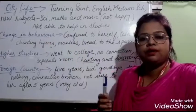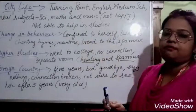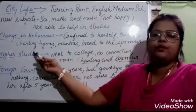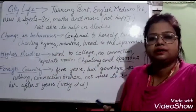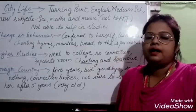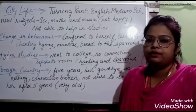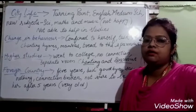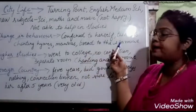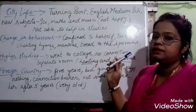Since the grandmother was not able to connect with the child anymore, her behavior changed. She confined herself — she didn't talk too much, and was always busy chanting hymns and mantras or reading religious scriptures. In the village she had offered stale bread to stray dogs, but in the city there were no stray dogs nearby. So in the evenings, after her prayers, she would offer bread pieces to sparrows, who came to her daily as a routine.